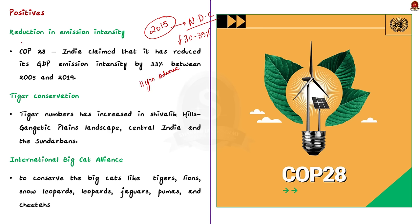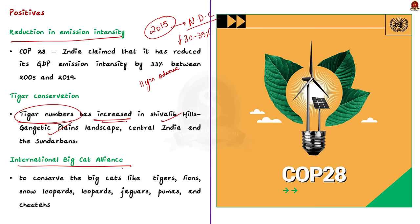Another positive is that due to conservation efforts taken by India, tiger numbers have increased in the Shivalik Hills and Gangetic Plain landscape. In addition, India launched the International Big Cat Alliance. Through these steps, India has taken efforts to conserve big cats like tigers, lions, snow leopards, jaguars, pumas, and cheetahs. These are some of the positive aspects highlighted in the article.